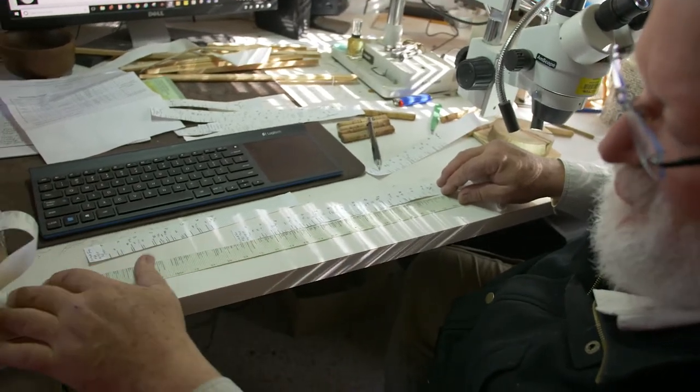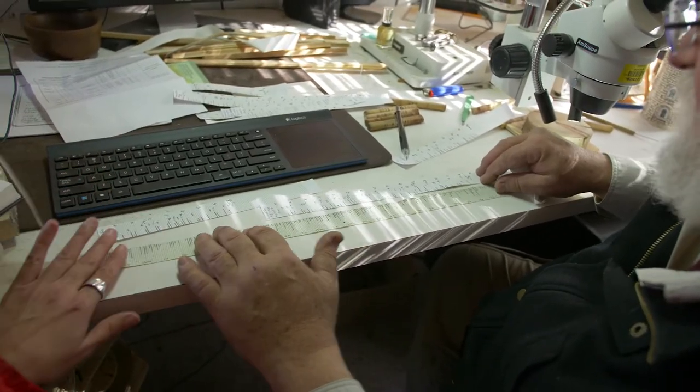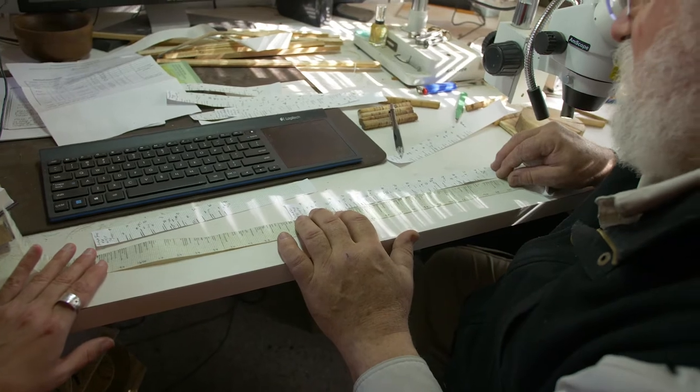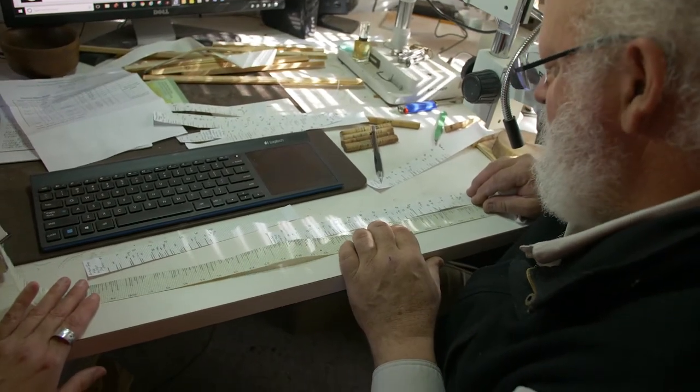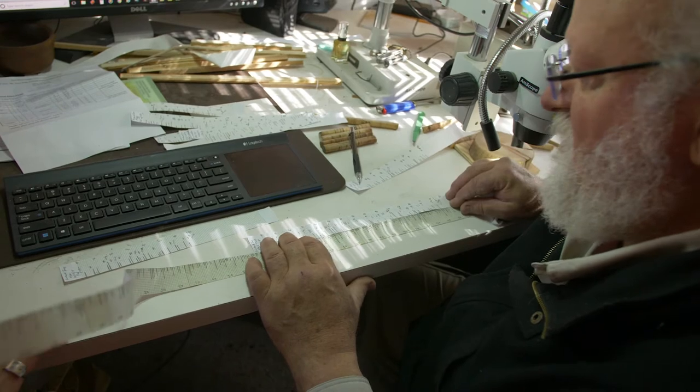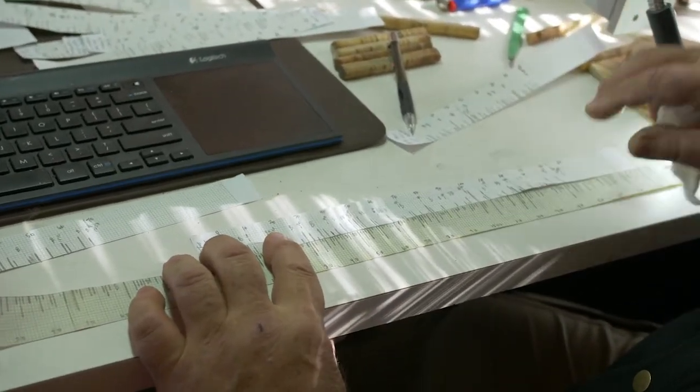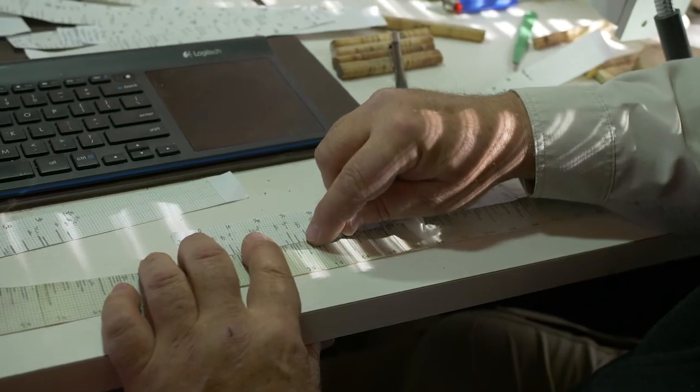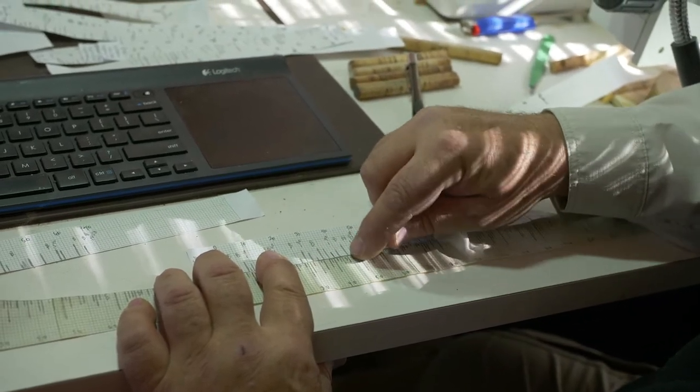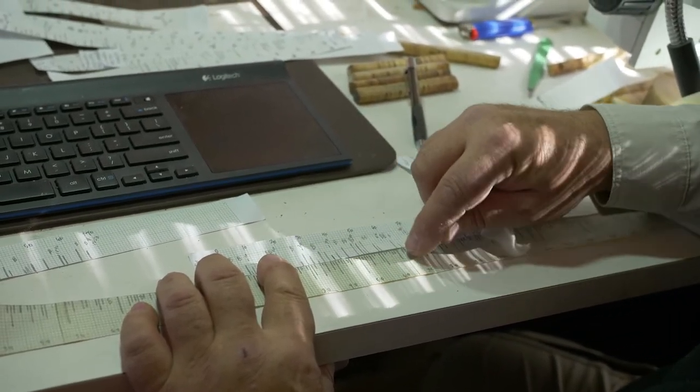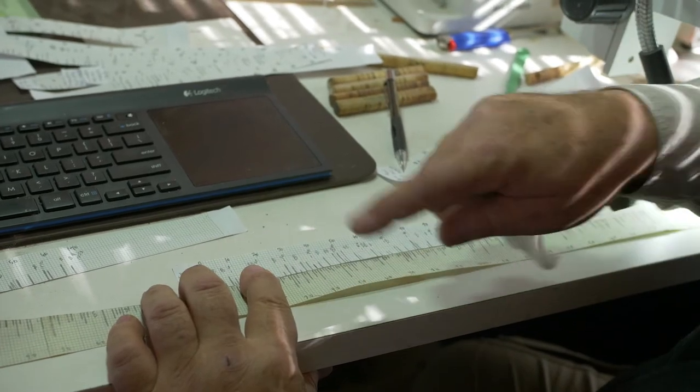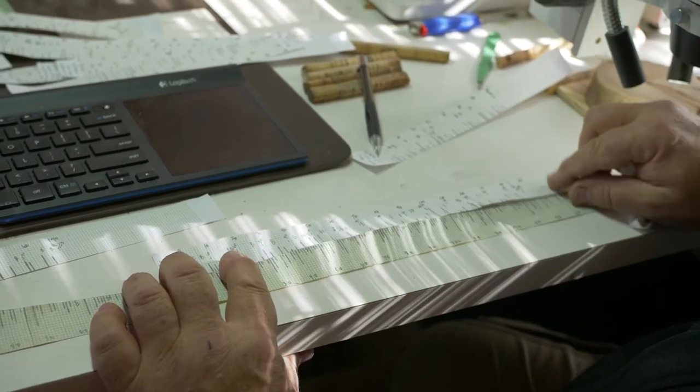And then, finally, if I'm lucky, I'll actually find it matching. So there you can see the match. All these rings are matching. The small rings are matching the small rings on the graph. And when it matches that good, I know I've got the dating.